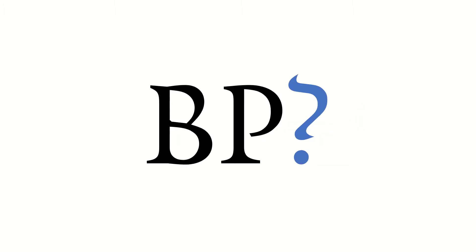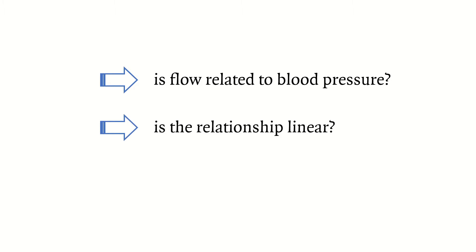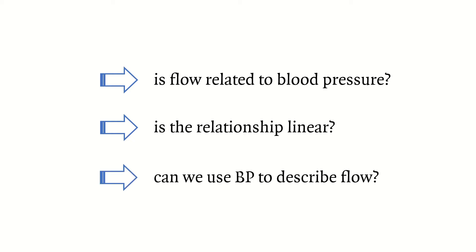I'd like to start by asking the question: what is blood pressure, and why do we even measure it? The common answers are that blood pressure is an indication of heart function or that it's correlated to blood flow. The problem is that to correlate blood pressure to flow, you need to answer three more complex questions: is flow related to blood pressure? Is the relationship linear — meaning the more you increase blood pressure, the more you increase flow? And can you use blood pressure to describe flow? The answers to these three questions are not straightforward.